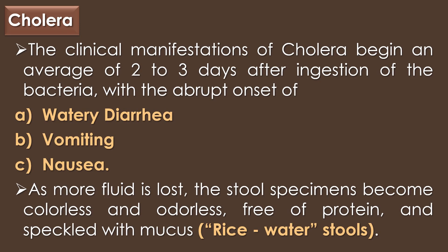The first clinical disease caused by Vibrio cholerae is cholera. The clinical manifestation of cholera begins an average of two to three days after ingestion of the bacteria, with the abrupt onset of watery diarrhea, vomiting, and nausea. As more fluid is lost, the stool specimen becomes colorless and odorless, free of protein, and filled with mucus — that is called rice water stools.